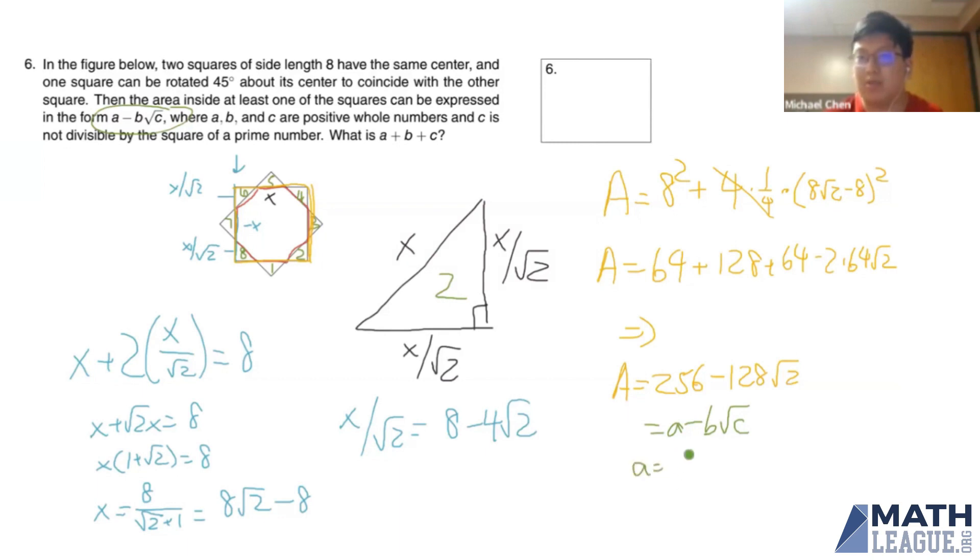b is equal to 128, and c is equal to 2. So going off of that, we know that a plus b plus c is equal to 386, which is our final answer for target 6.